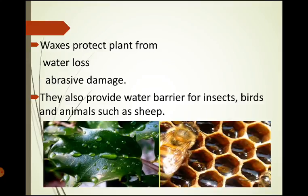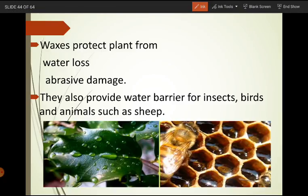The function of waxes in plants is that it prevents water loss — this is the most important function. It prevents desiccation of the plant by acting as an insulator and preventing water evaporation. This layer is present on the leaves, fruits, stems, and different organs of the plant. The second function is that it protects the plant from abrasive damage by forming protective layers on the surface.